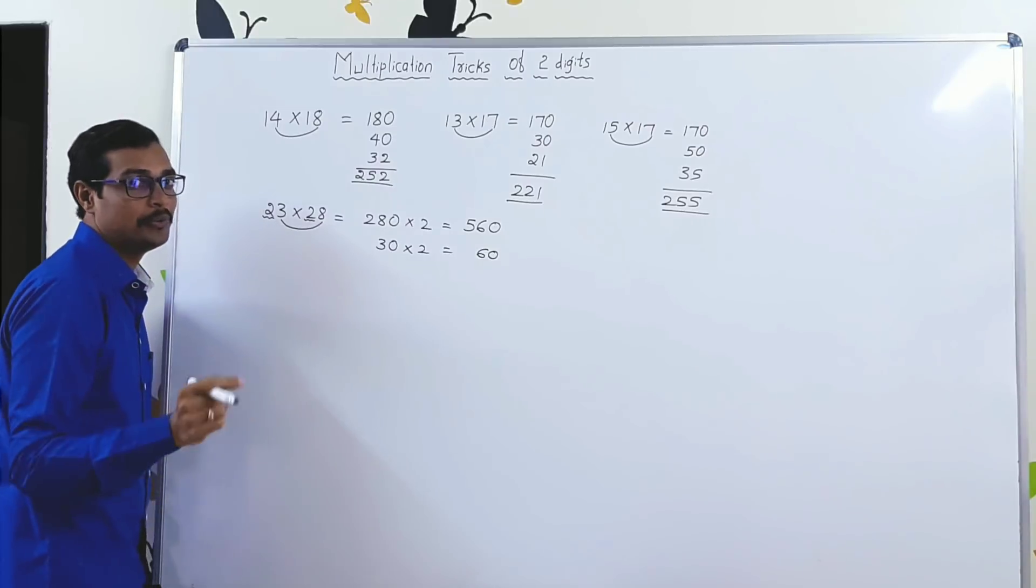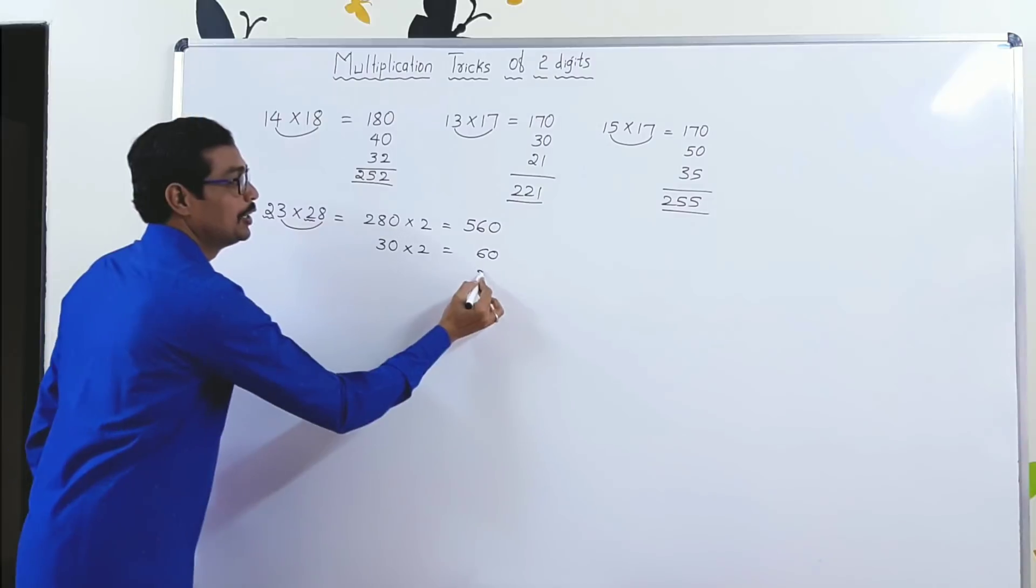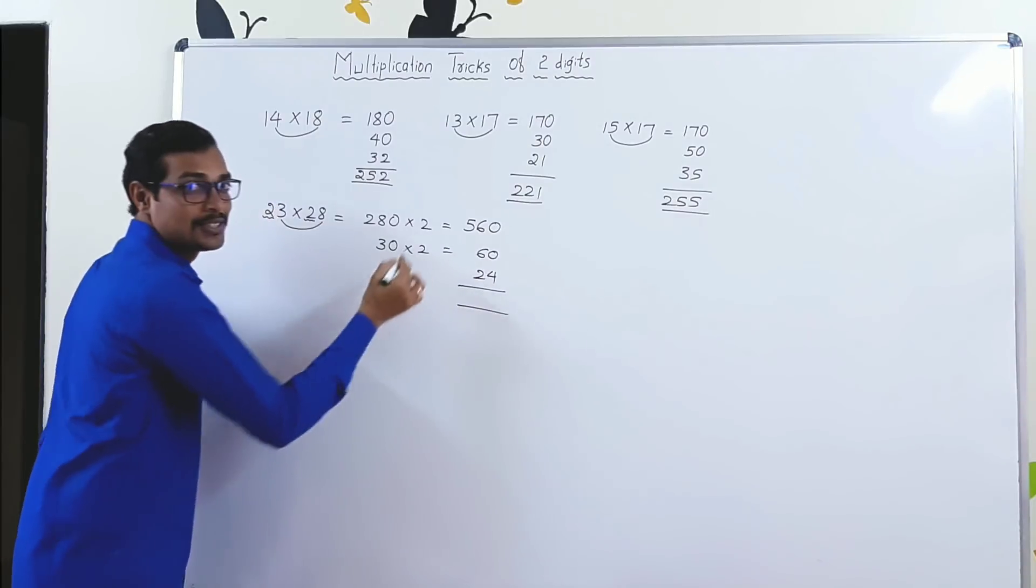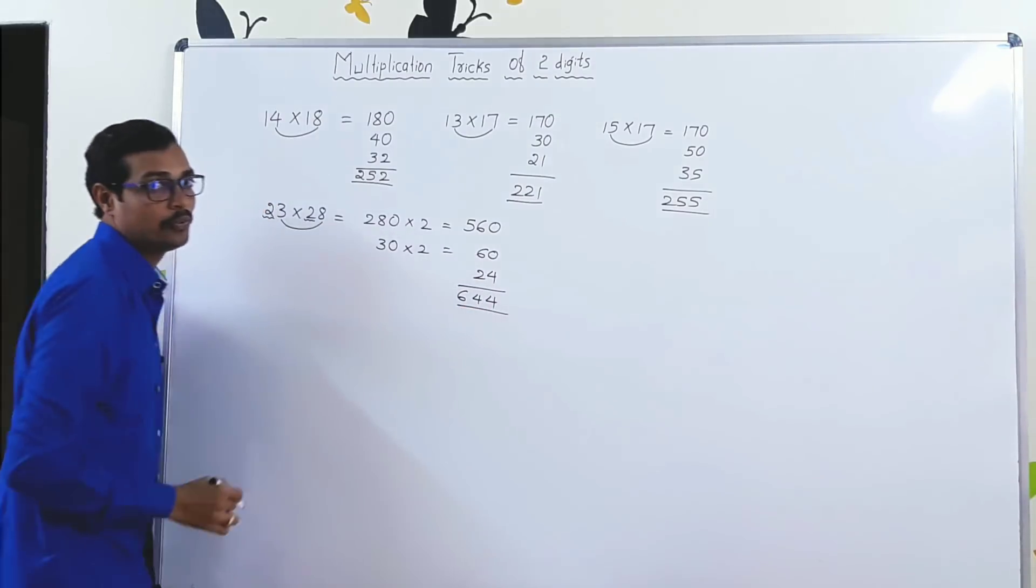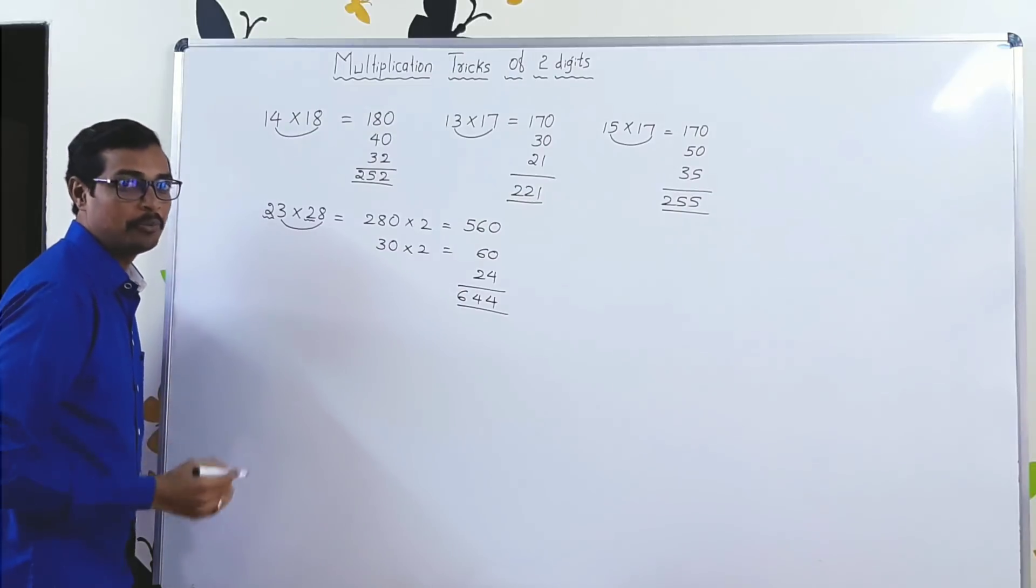Nothing to worry about the unit digit. You know it very well. 3 × 8 is 24. So your final answer, 644.